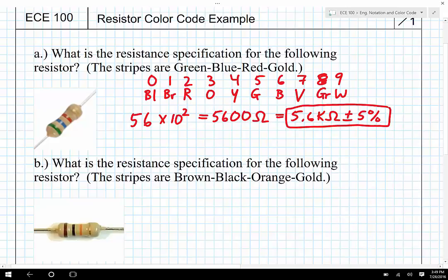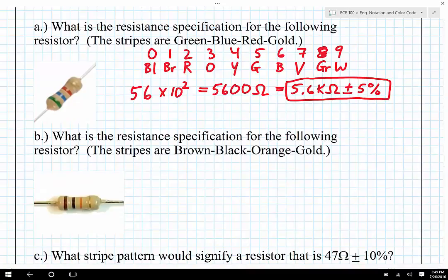Now, we don't need to reconstruct the color code for the second one, but it'll still be helpful to us. Here the stripes are brown, black, orange, gold. So brown, black is a very common pattern that you're going to see an awful lot. Probably most of the most popular resistors are going to start brown, black, something, and we'll see why that is here in a second.